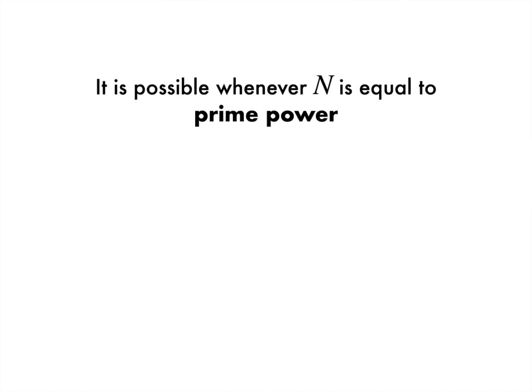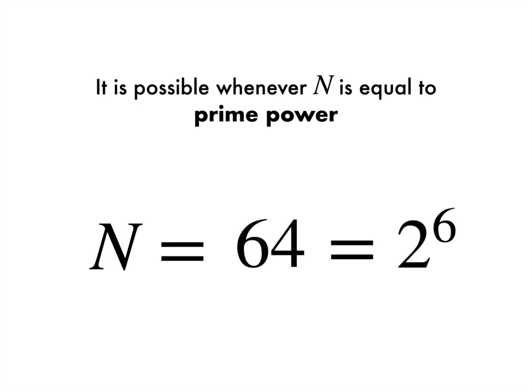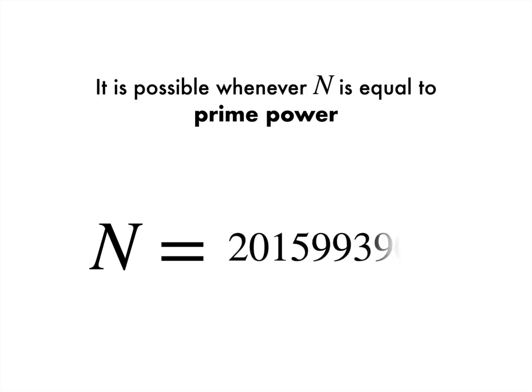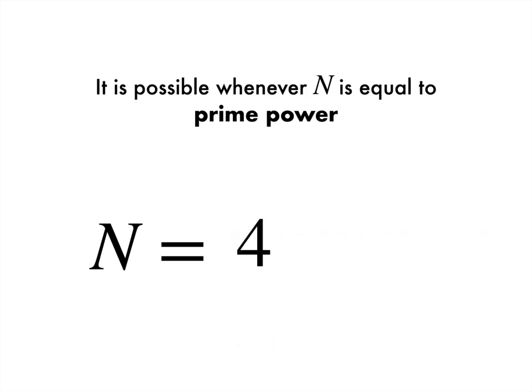In fact, it's possible whenever n is a prime power. What's a prime power? Well, this just means that n is equal to a prime number elevated to a whole number power. For instance, n could be 9 because 9 is 3 squared and 3 is prime. Or it'll work if n is 64 because 64 is 2 to the power 6 and 2 is prime.